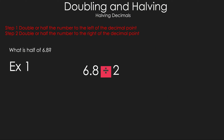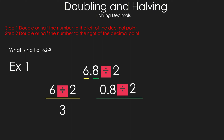Now let's look at halving. What is half of 6.8? Following the steps, separate the number. Divide 6 by 2 to get 3. Divide 8 tenths by 2 to get 4 tenths. Combine them, and the answer is 3.4.